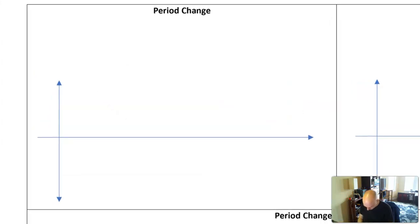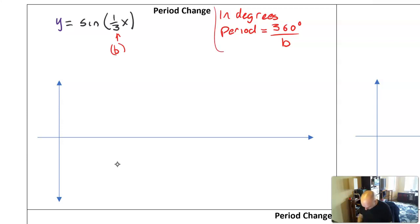The graph we're going to look at is y equals sine of one-third x. Now remember, in degrees, the period of a graph could be found by doing 360 divided by the b value. Well, we're not in degrees anymore. I hate degrees.